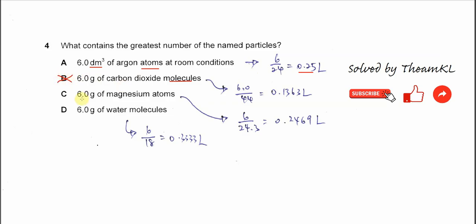So for C, 6 grams of magnesium atoms, so we need to use 6 grams over the molar mass of magnesium, 24.3. We get 0.2469L. So this one also smaller than A. C cannot be the answer.